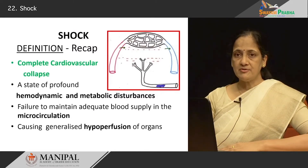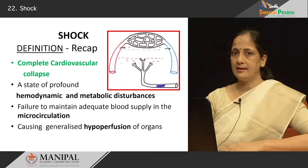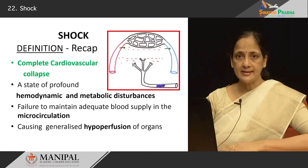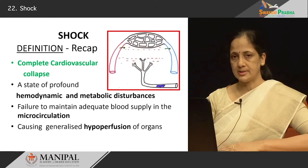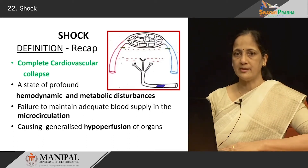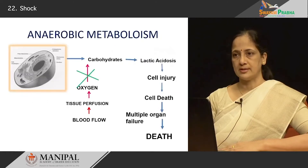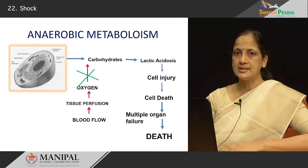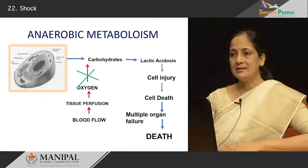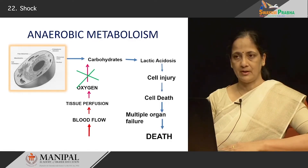Let us recap the definition of shock. There is complete cardiovascular collapse — it is generalized and diffuse — wherein there is profound hemodynamic and metabolic disturbances characterized by a failure to maintain blood flow in the microcirculation, resulting in generalized hypoperfusion of organs. Therefore, there will be involvement of a large number of organs, tissues, and cells, resulting in multi-organ failure, which will finally be fatal to the patient.